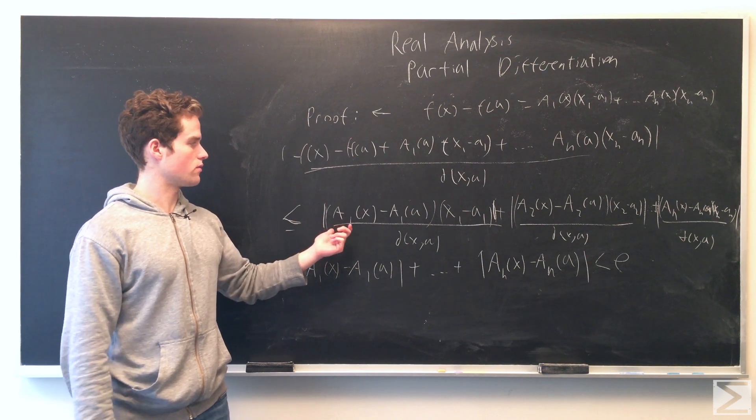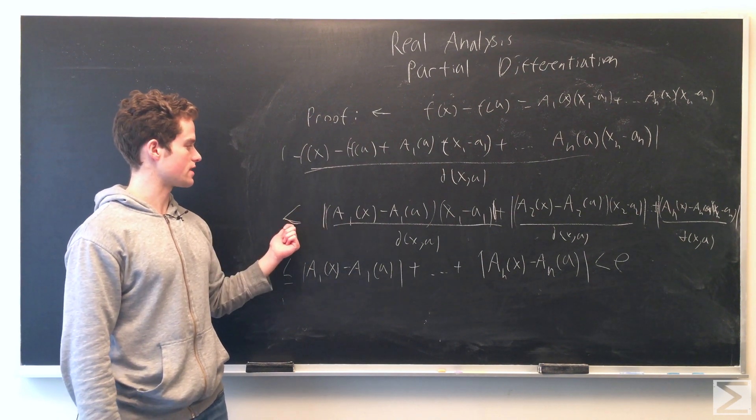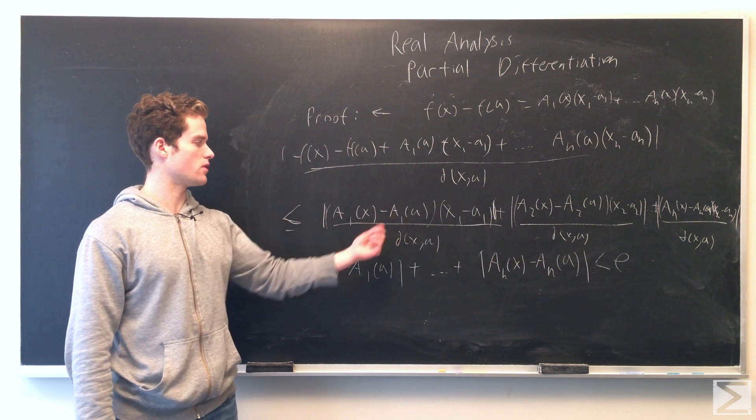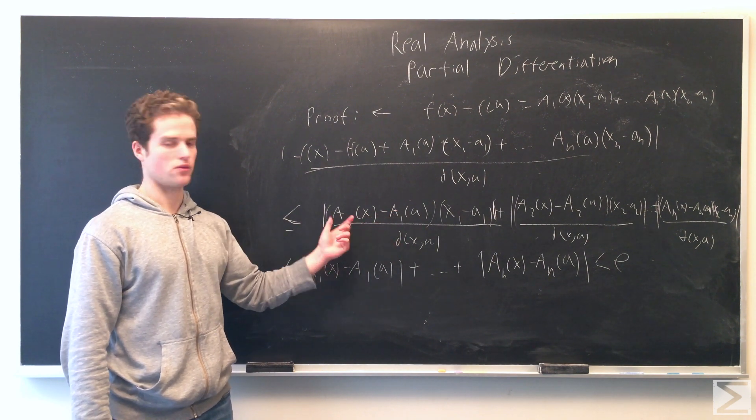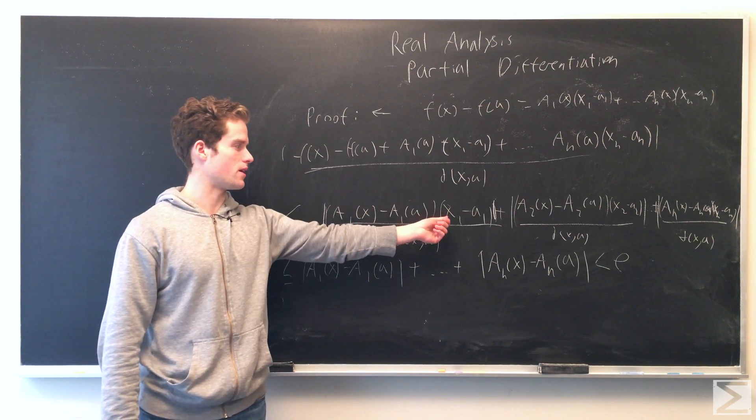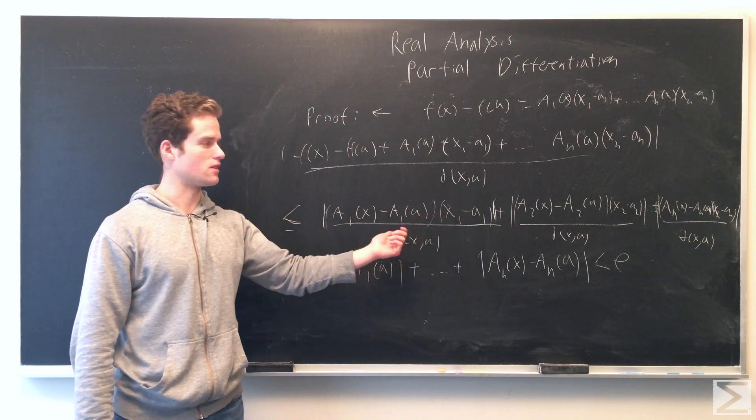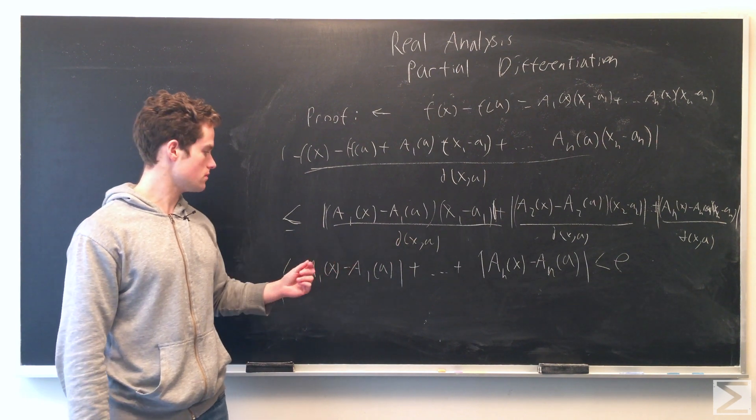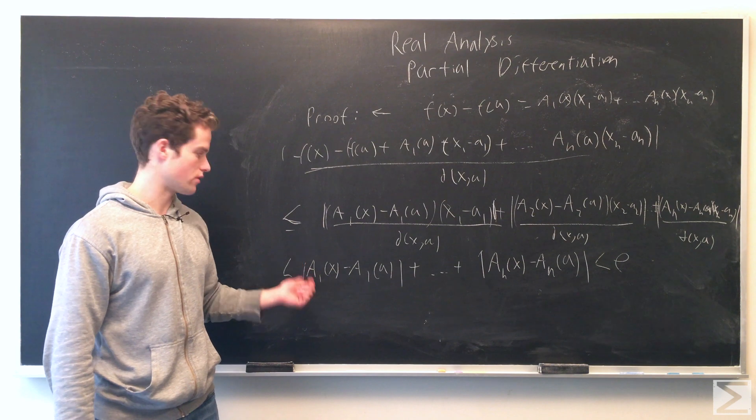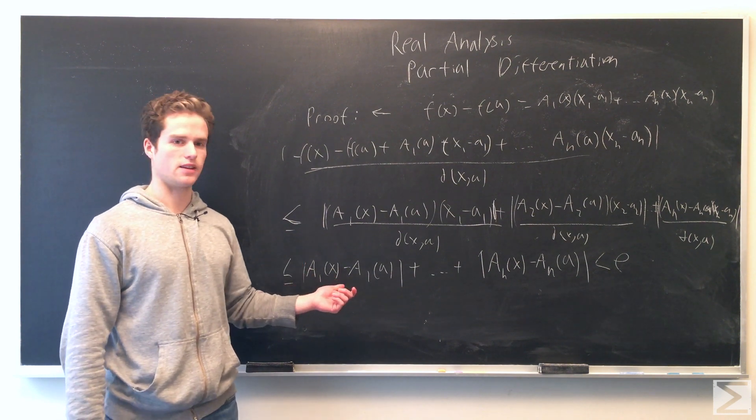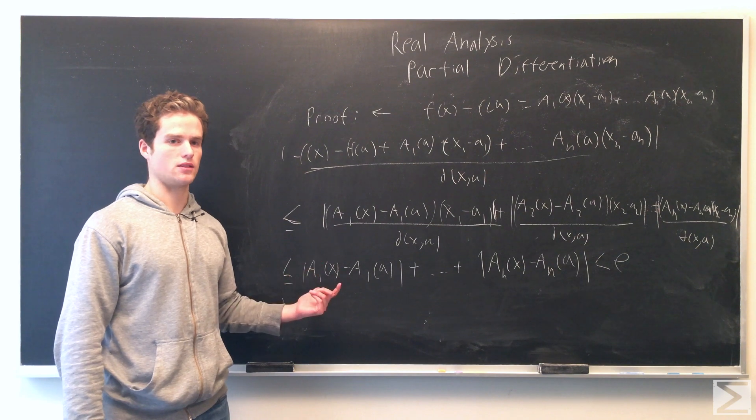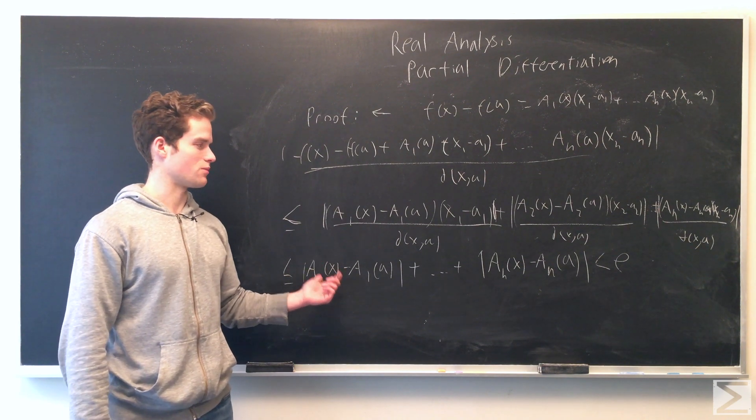We're left with this being less than or equal to sum of |a_i(x) - a_i(a)| times |x_i - a_i| over d(x,a) for all i. Notice that |x_i - a_i| over d(x,a) is less than or equal to 1. So this is all less than or equal to sum of |a_i(x) - a_i(a)|. Since we assume the a_i's are continuous at a, as x approaches a these all approach 0.